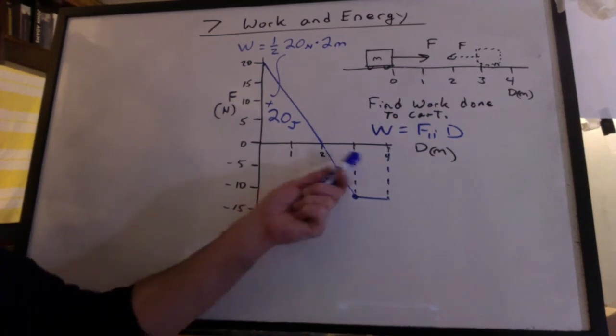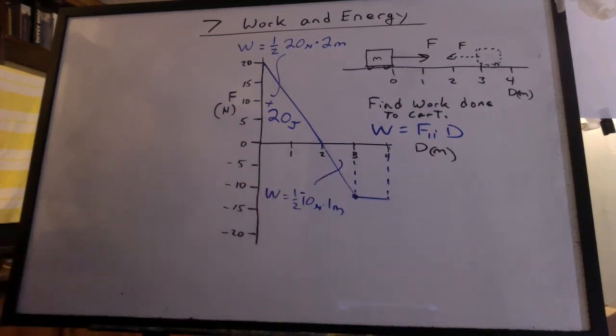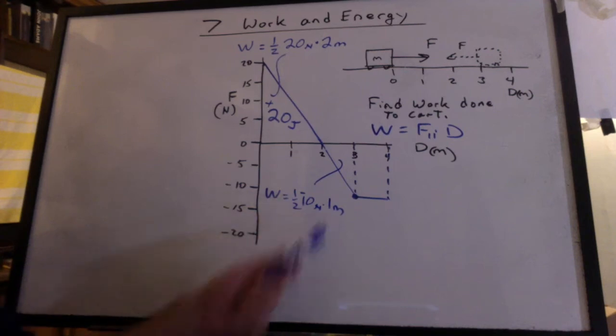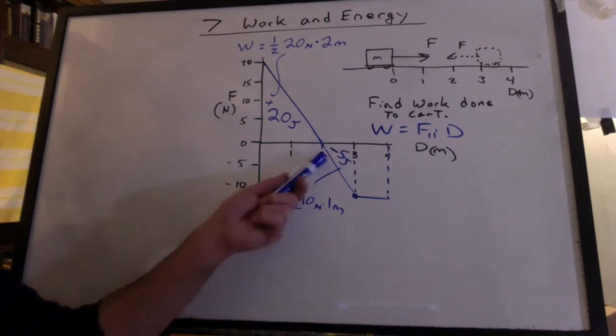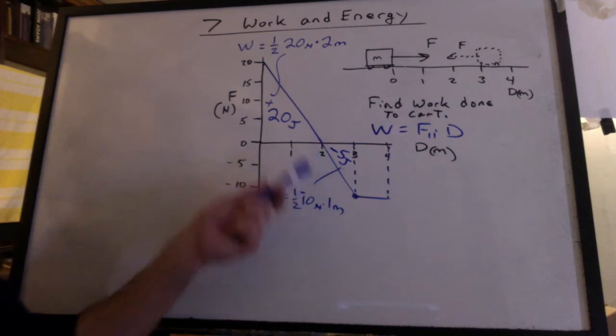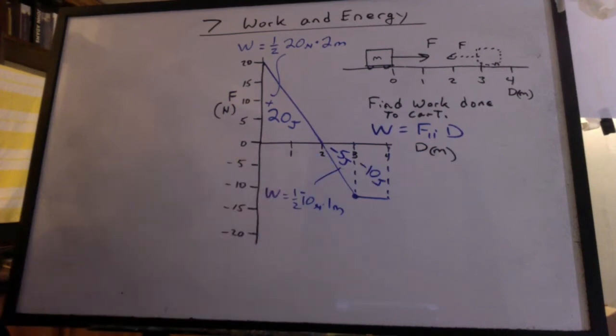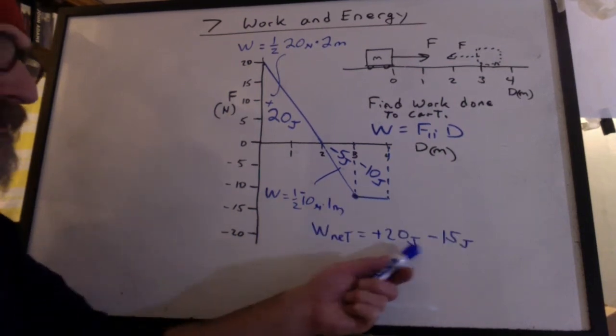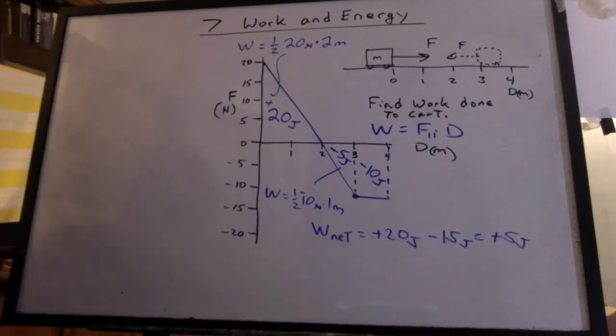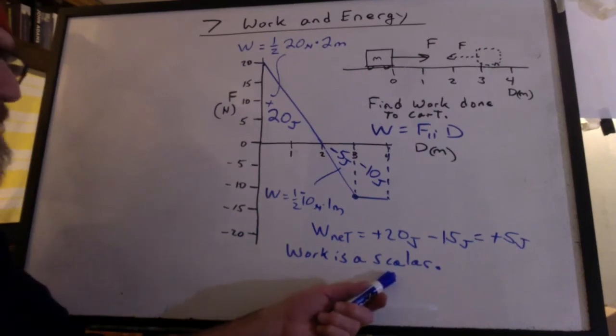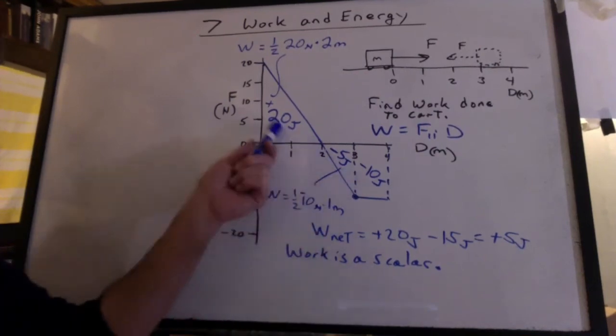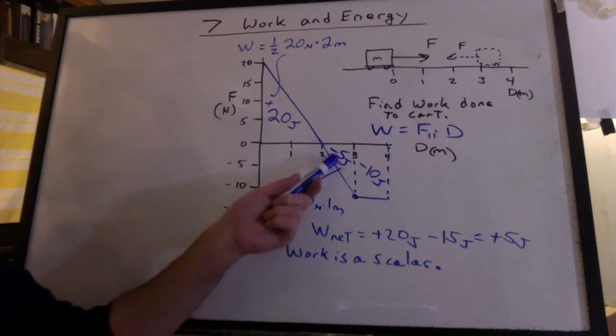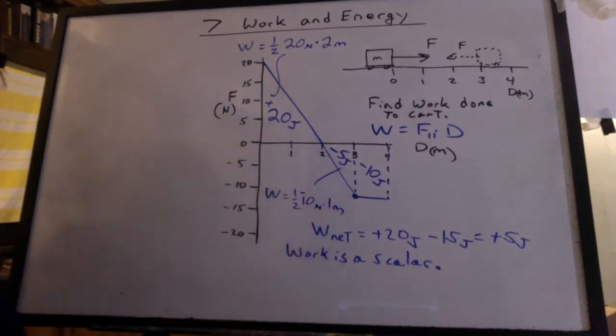Now we can break this up into two shapes over here. And we'll have a one-half times a negative 10 newtons times one meter, giving us negative 5 joules of work, which means the cart has now lost 5 joules. The next segment is also negative. It's a negative 10 joules. So the net work done to this cart is positive 20 joules minus 15 joules. So we've added 5 joules to the cart. Remember, work is a scalar quantity. It's not a vector. These are not directions on a compass. This is just whether we're adding or taking away energy from the cart.